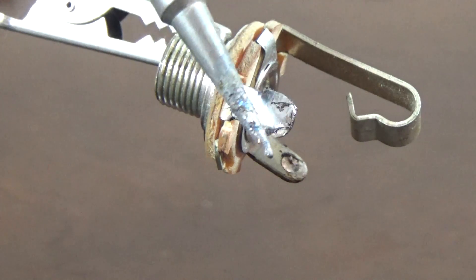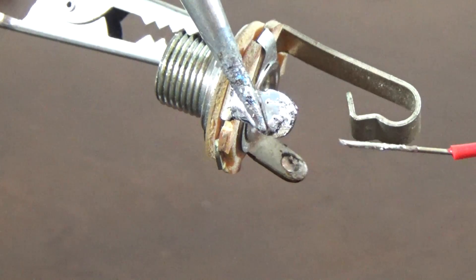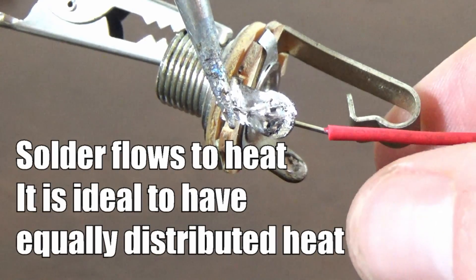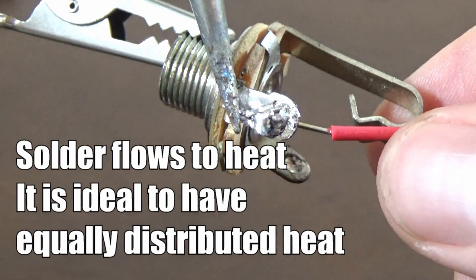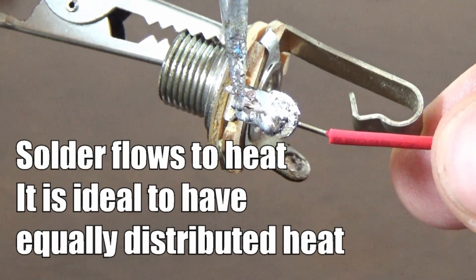The objective of your soldering is to connect the wire to the connection and the way that you do it is to establish the connection through the solder. Solder flows where the heat is so ideally you want to heat the connector and the wire at the same temperature. This way you get a nice even distribution of solder.